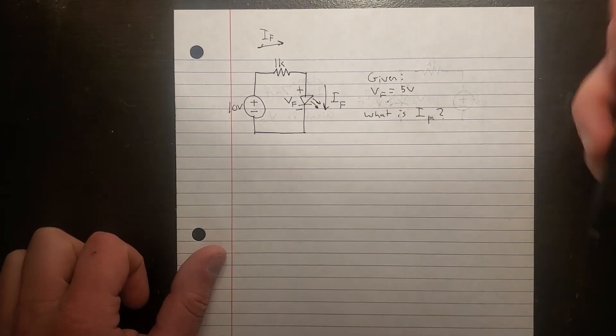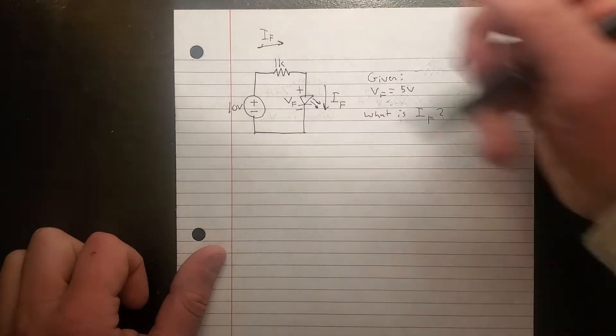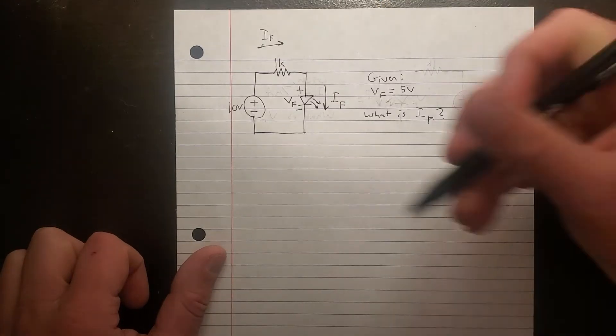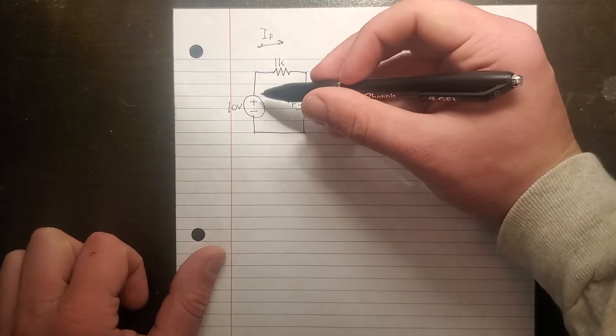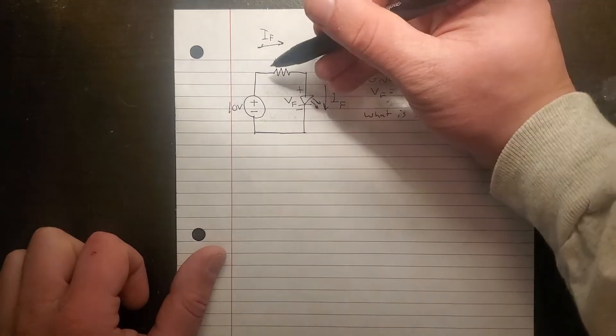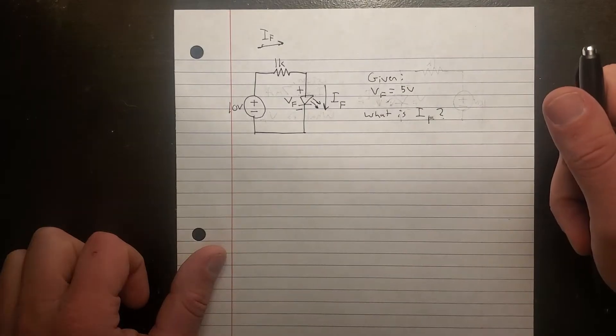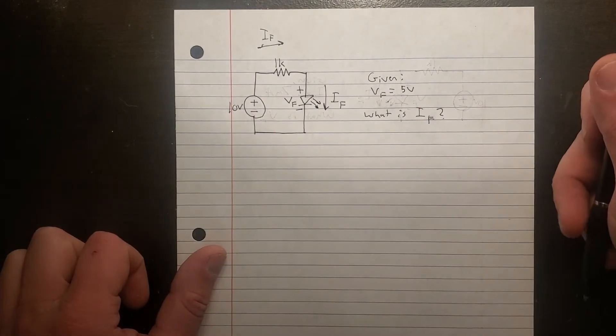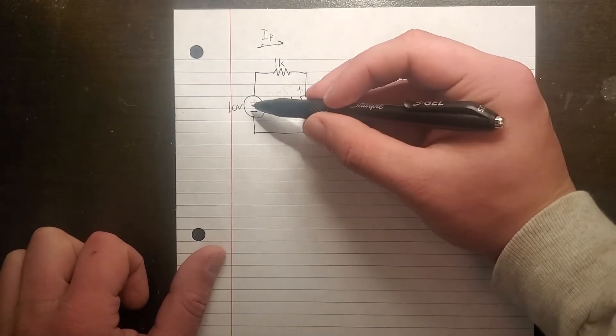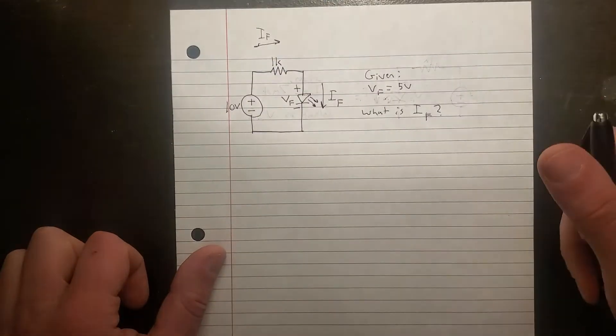So now we have the 5V VF. Now we also know that all of these elements, so 10V plus the voltage drop here and the voltage drop here, it has to end up being 0 actually. Because when it returns, it has to be 0 on this side and 10V on this side.